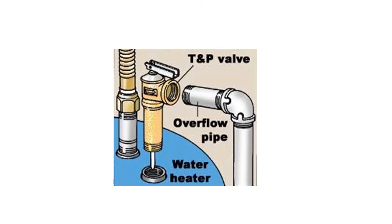The next device is a thermostat and pressure relief valve, also called the TP valve. This valve protects the water heater by discharging water when the water inside the heater reaches excessively hot temperatures or high pressures. The temperature setting is typically 210 degrees Fahrenheit and the pressure setting is 150 pounds per square inch gauge. This is an excellent indicator of whether or not the water heater is functioning properly — if operating normally, there should be no water discharged from the TP valve.